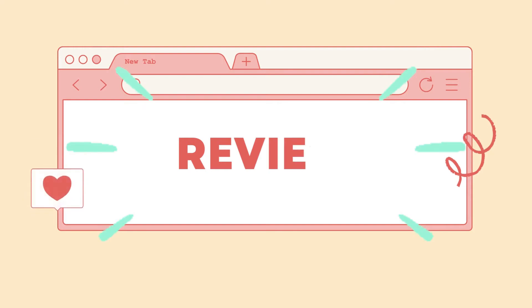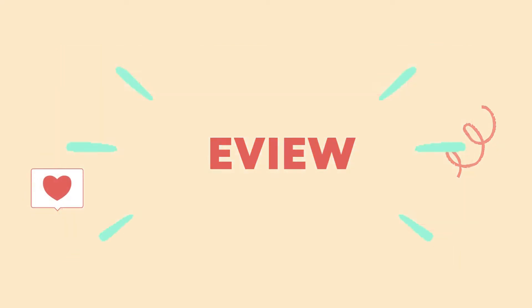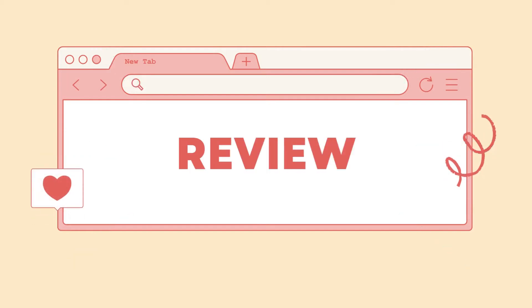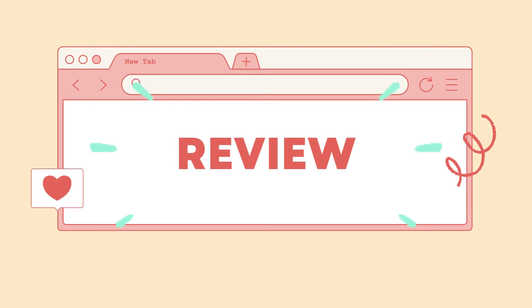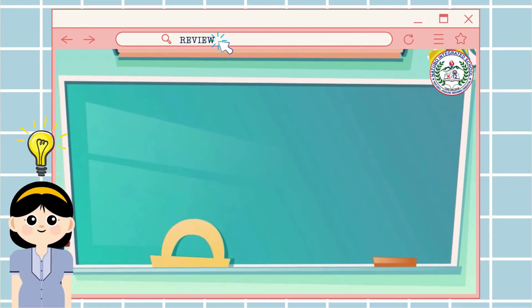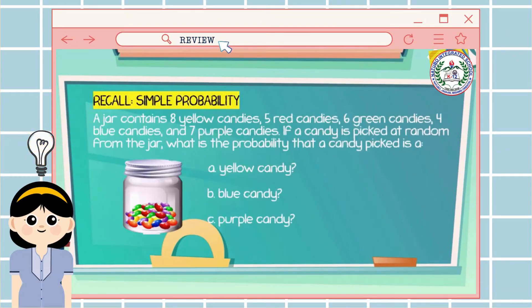Before we proceed with our discussion, do you still remember how to calculate simple probability? Let me test your understanding first of the past lesson with this example. A jar contains 8 yellow candies, 5 red candies, 6 green candies, 4 blue candies, and 7 purple candies.